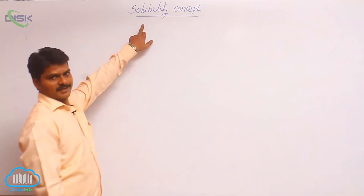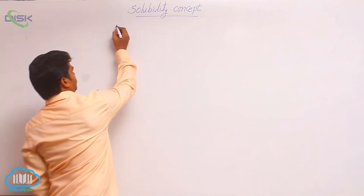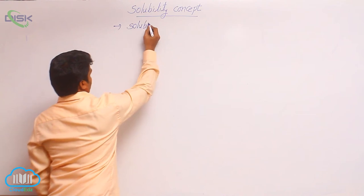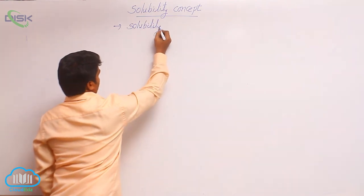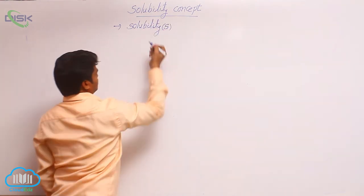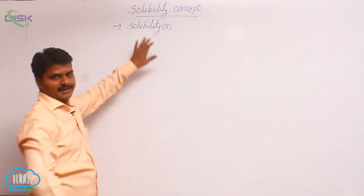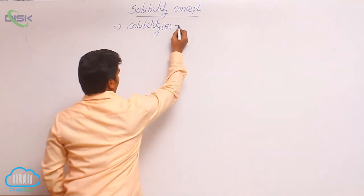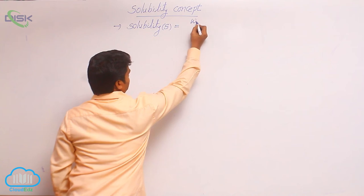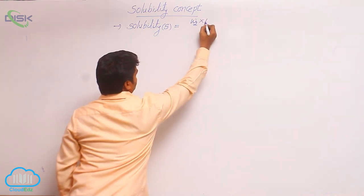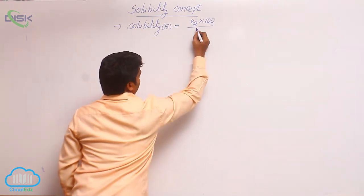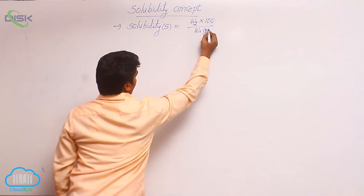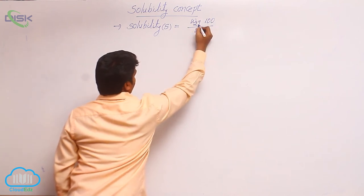We will discuss solubility product. What is solubility? It is denoted by S. Solubility can be defined from its formula itself. The formula is W₂ × 100 / W₁, where both W₂ and W₁ are in grams.